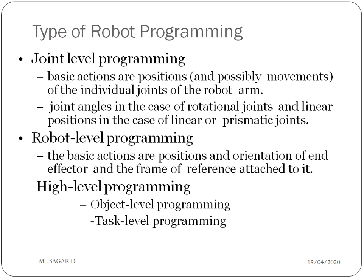In joint level programming, joint angle is used in the case of rotational joints. If the joint is rotational, it has some joint angle. In the case of a prismatic or linear joint, we have linear position. This is related to the movement of the robot or robotic part like the end effector.